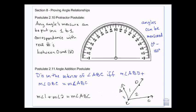If D was outside somewhere, it wouldn't work that way. But essentially, what this tells me is I can add up two angles, or three angles, or four angles that are connected to equal the largest of the angles in the bunch.